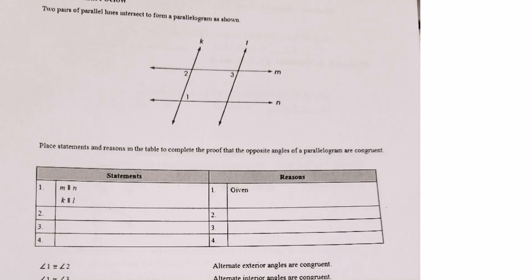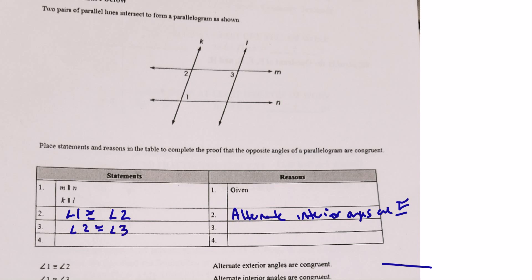Number 40: we have two sets of parallel lines and need to write a proof. First, angle 1 is congruent to angle 2 by the alternate interior angles theorem. Then angle 2 is congruent to angle 3 because corresponding angles are congruent when lines are parallel. Finally, by the transitive property, angle 1 is congruent to angle 3.